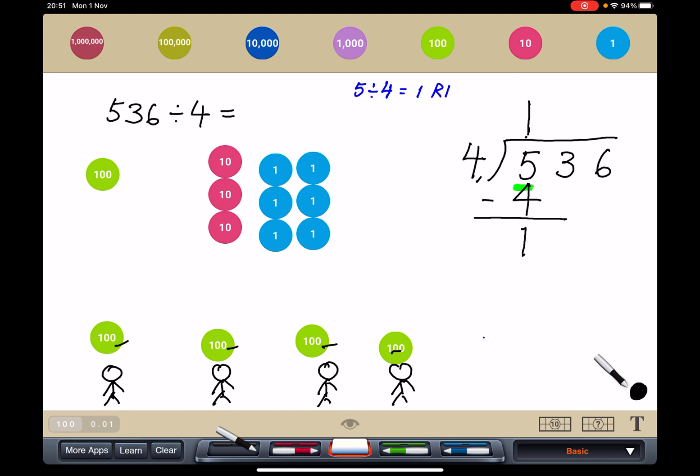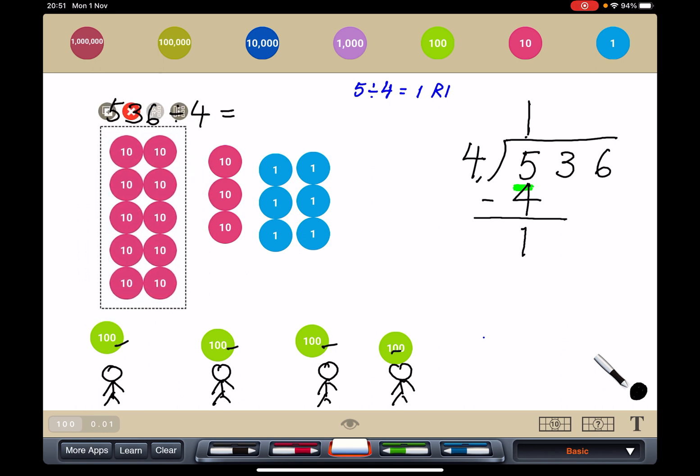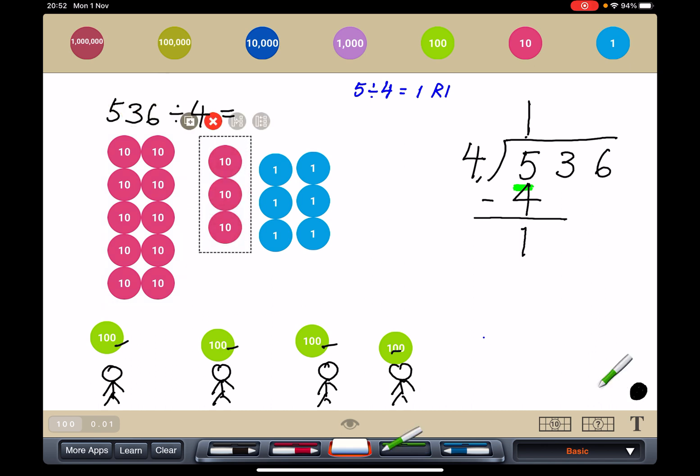And you can see that 100 is here. Now, what do I do with this 100? I'm going to regroup. So watch carefully. I'm going to change it to become 10 tens. 100 is 10 tens. And I have this 3 tens, which is here.